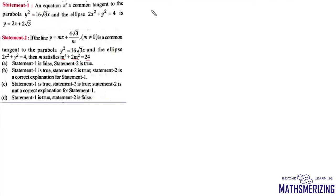So we have this parabola which is y^2 = 16√3x and then we have this ellipse which is x^2/2 + y^2/4 = 1.